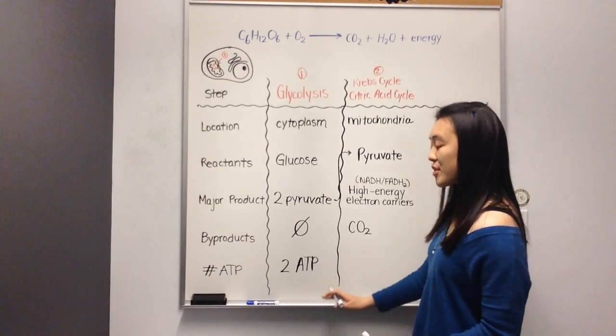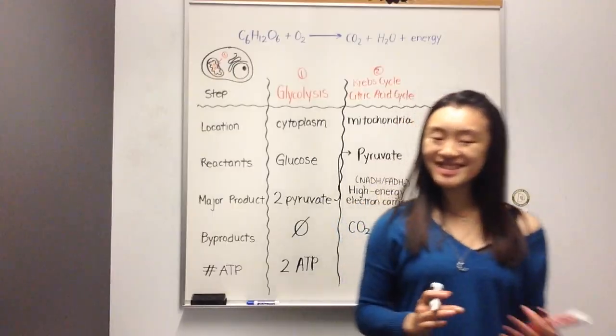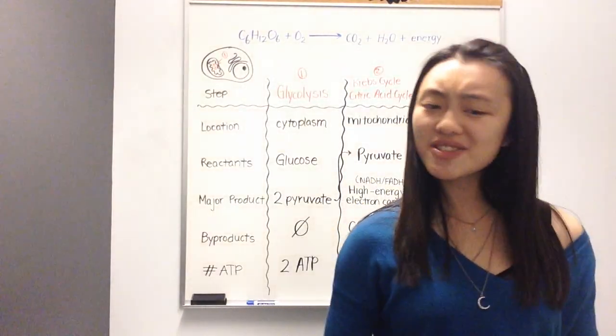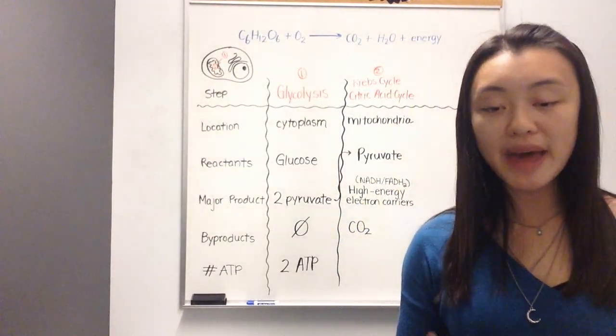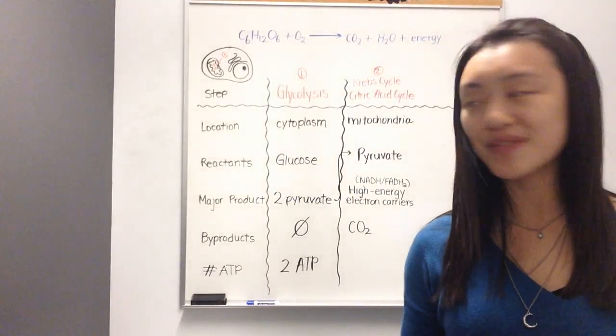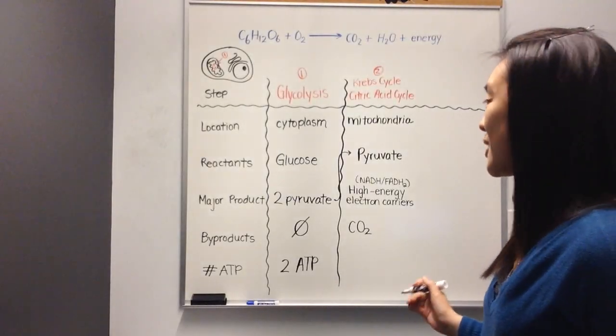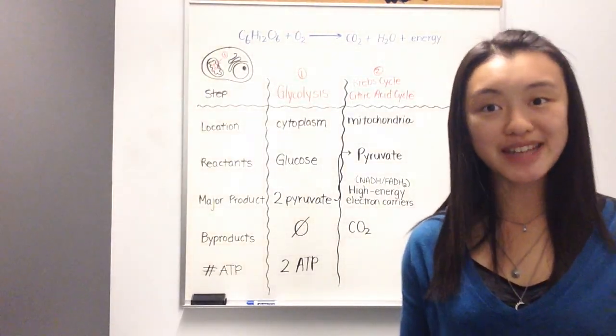During the Krebs cycle, the number of ATP that we produce is still not a lot. It's not enough to power the reactions of daily life. Unfortunately, the Krebs cycle is only able to provide us with two molecules of ATP.